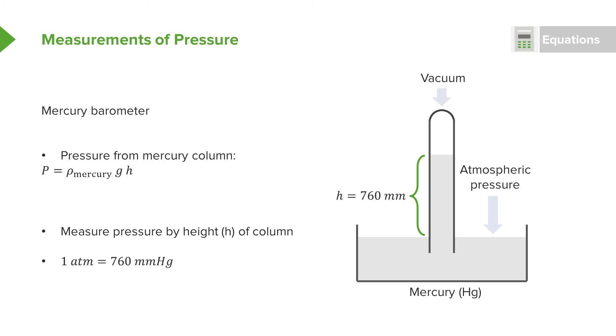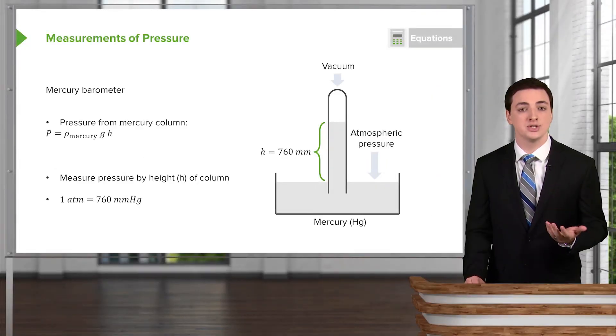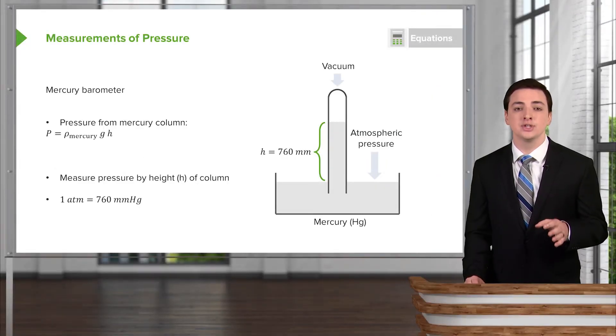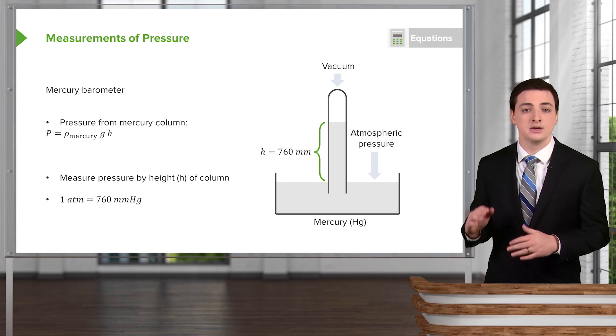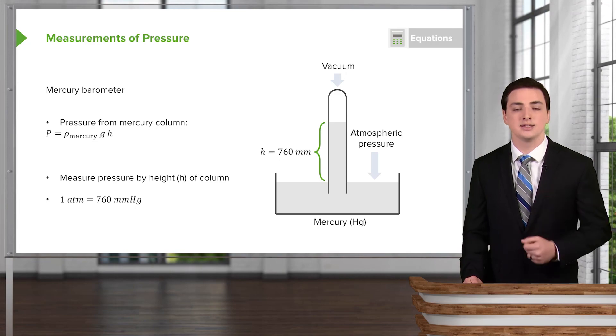The way to measure pressure, as I discussed, is literally to measure just the height. How high does the mercury go? And we can, in fact, use this height as an actual measure, as a unit of the pressure. And so we could say that one atmosphere of pressure is equal to 760 millimeters, the height, of mercury, which, again, is measured as or written as Hg.